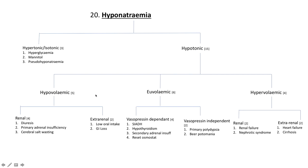Hypovolemic hyponatremia can be caused by renal or extra-renal processes. Euvolemic hyponatremia results from the extracellular gain of pure water, and can be caused by vasopressin-dependent or vasopressin-independent processes. Hypervolemic hyponatremia results from the extracellular gain of hypotonic fluid — more water than salt — and can also be caused by renal or extra-renal processes.